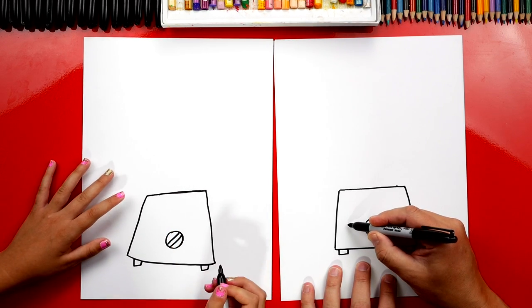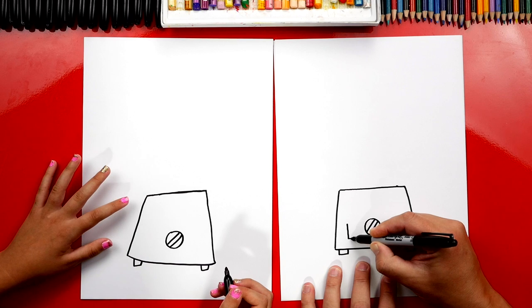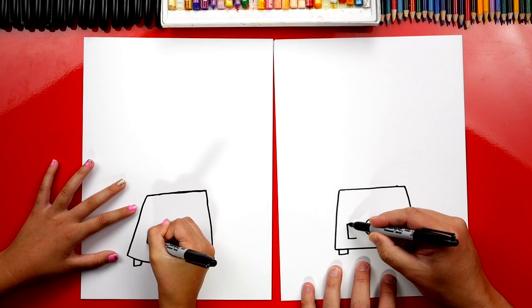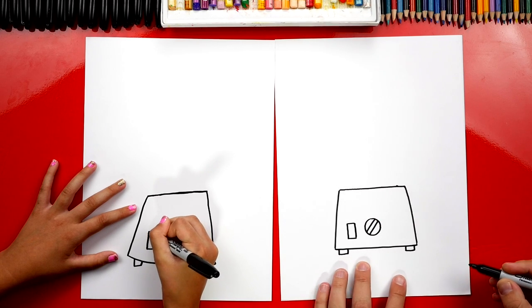Let's also draw the power switch over here on the left. We could draw another rectangle shape. I'm gonna draw the letter L and an upside down L to finish the rectangle shape.